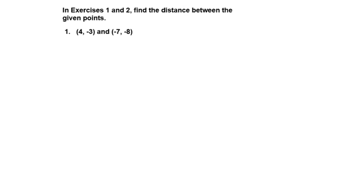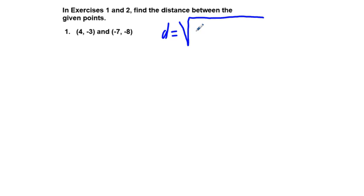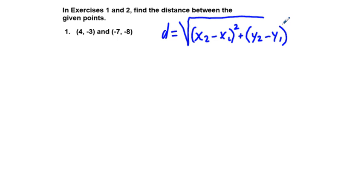In exercise 1, we find the distance between the given points. There is a distance formula: d equals the square root of the quantity (x₂ minus x₁) squared plus the quantity (y₂ minus y₁) squared.